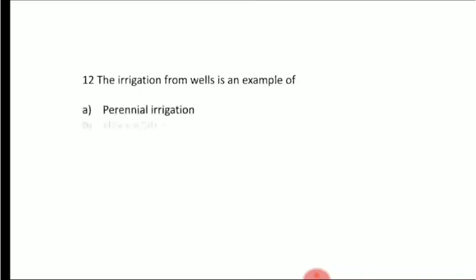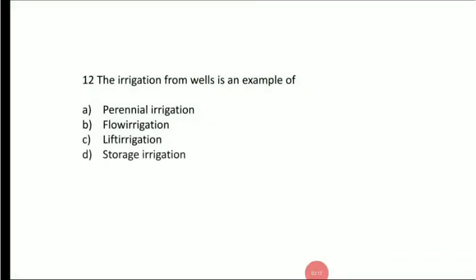Next question: irrigation from wells is an example of — Option A: perennial irrigation, Option B: flow irrigation, Option C: lift irrigation, Option D: storage irrigation. Answer is Option C, lift irrigation. The water source is at a lower level and the water is lifted for irrigation.